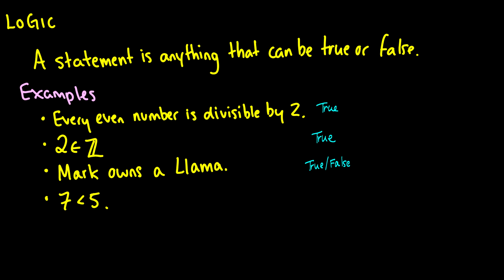7 is less than 5. The statement is false, but it still is a statement because we are putting a fact down there. We are declaring a fact, and we can either say this is true or this is false.